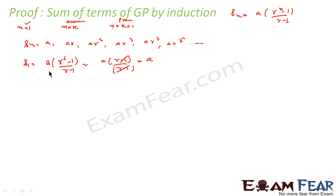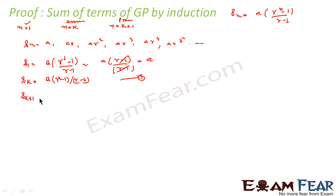Now let us assume that for s of k this is true — that is, s of k equals a times (r to the power k minus 1) by (r minus 1). This is equation 1. We have to prove it for k plus 1. Now s of k plus 1 is nothing but s of k plus t of k plus 1; that is, the sum of k terms plus the next term gives s of k plus 1.